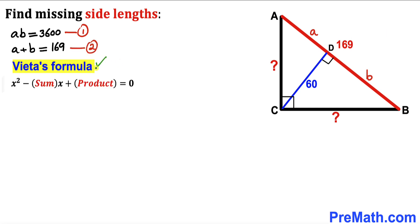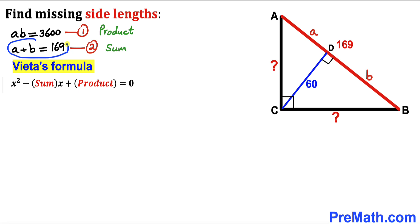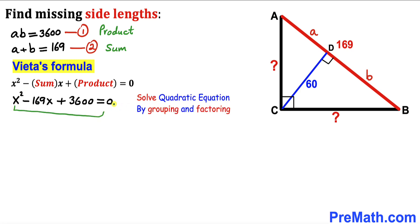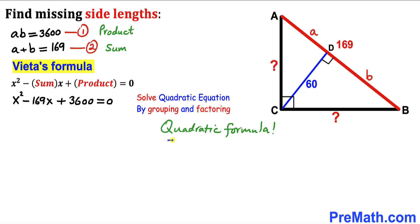Now let's recall Vieta's formula for a quadratic equation: x squared minus (sum of roots) times x plus (product of roots) equals zero. Here we have the sum of roots and the product of roots. So our equation becomes x squared minus 169x plus 3600 equals zero. We are going to solve this by grouping and factoring, though you may use the quadratic formula as well.